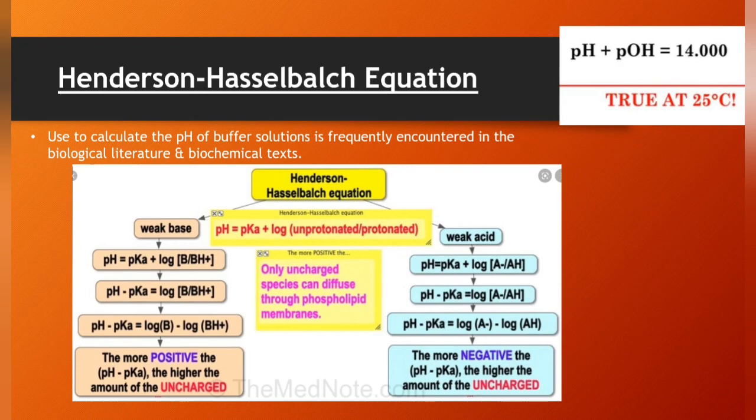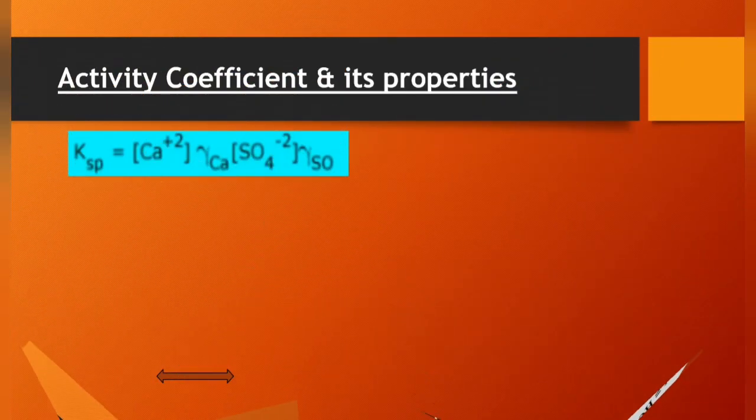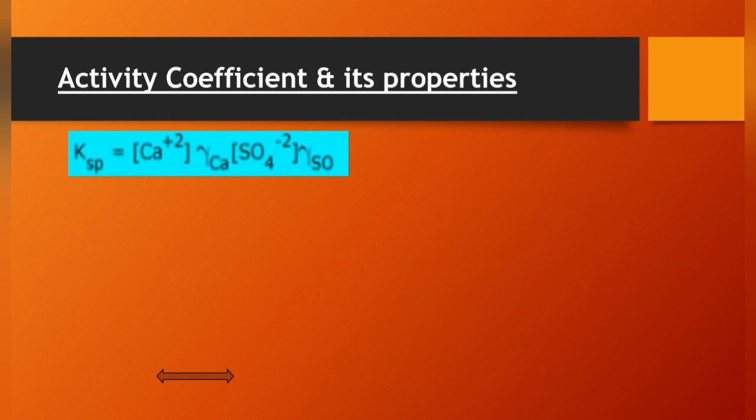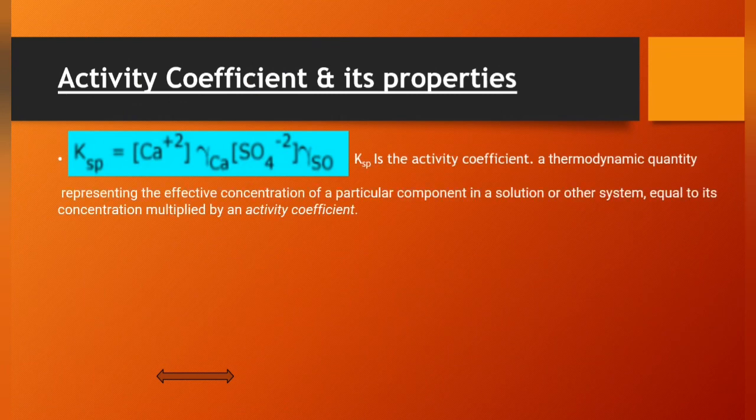Activity coefficient and its properties. The activity coefficient is a thermodynamic quantity representing the effective concentration of a particular component in a solution or other system, equal to its concentration multiplied by an activity coefficient.